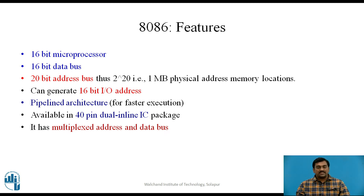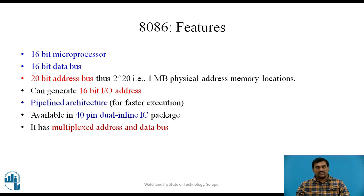8086 is a 16-bit microprocessor — by 16-bit we mean that it is designed in such a way that it is able to handle 16-bit data at a time during its operation. It has a 16-bit wide data bus and a 20-bit address bus, meaning it is able to access 2 raised to 20, that is 1 megabyte of physical address memory.